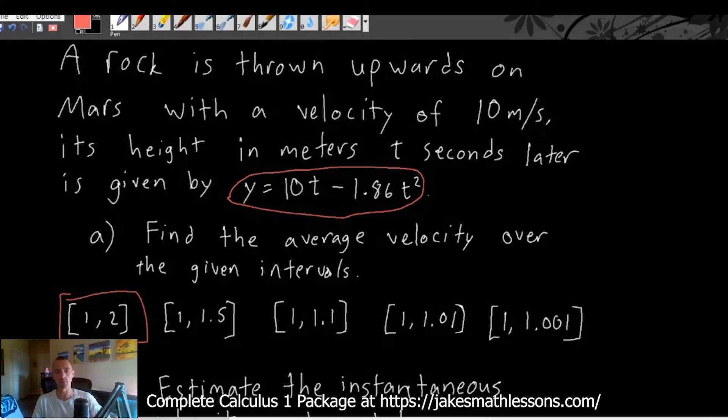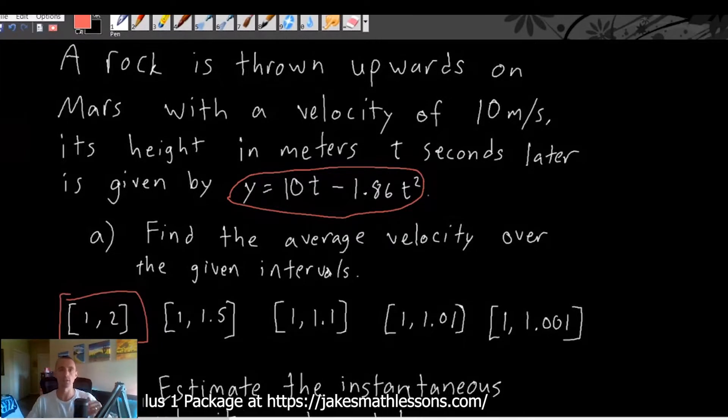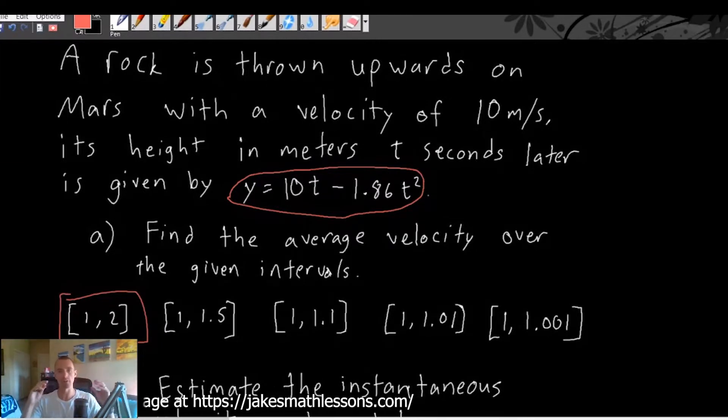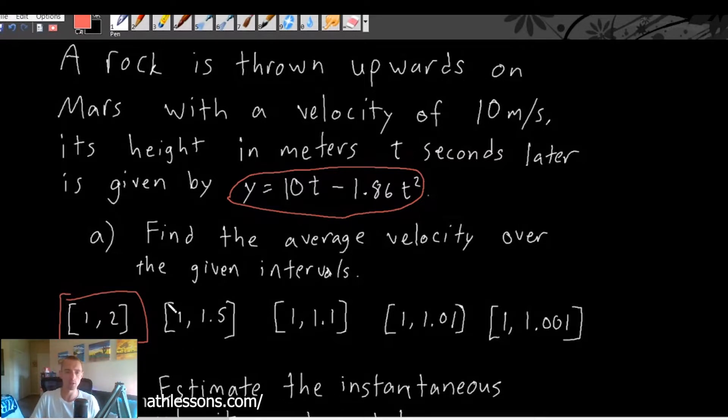If we were to measure basically where the rock was at one second, where it is at two seconds, and then find the average velocity between those two measurement points. Same thing here, the average velocity from one second to one and a half seconds.